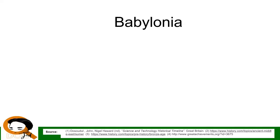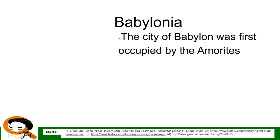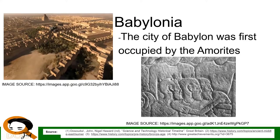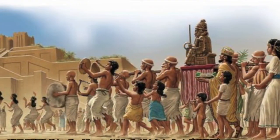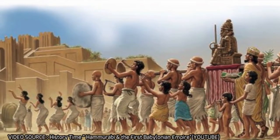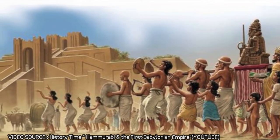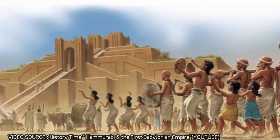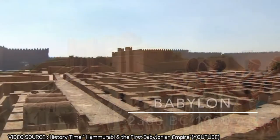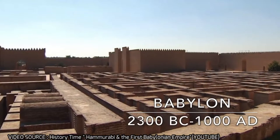For Babylonia, the city of Babylon was first occupied by the Amorites. The Amorite king Hammurabi created the Hammurabi Code and helped Babylon surpass the Sumerian city of Ur as the region's most powerful city. According to legends, King Nebuchadnezzar II built the Hanging Gardens of Babylon for his wife, Queen Amytis.